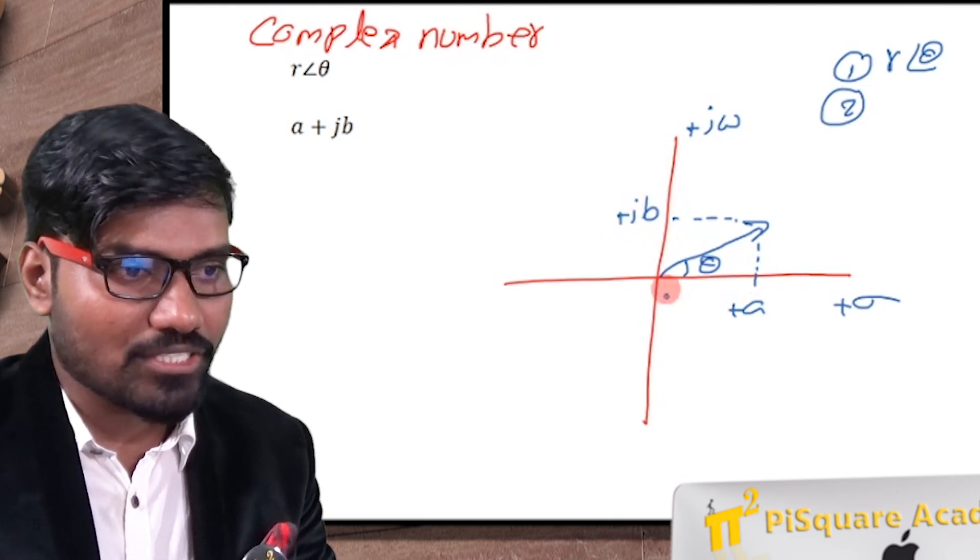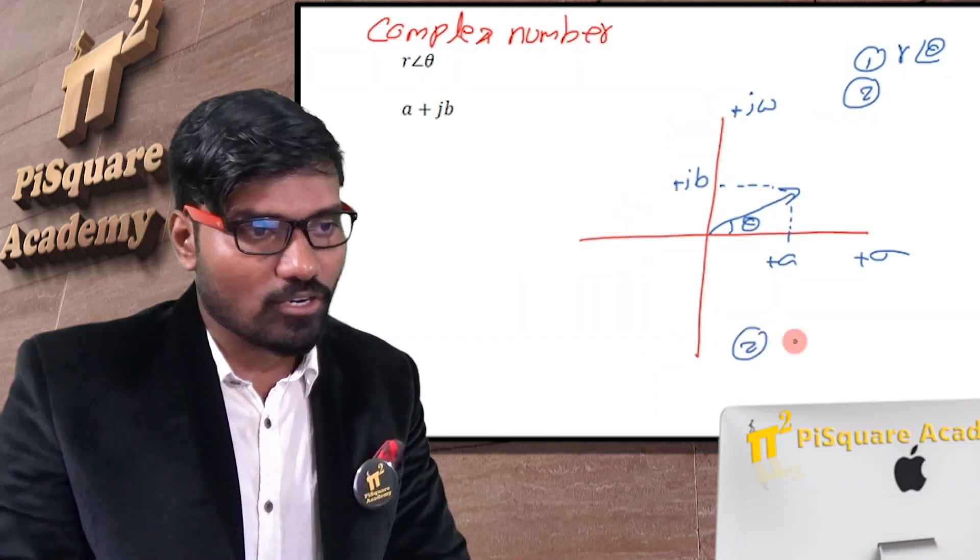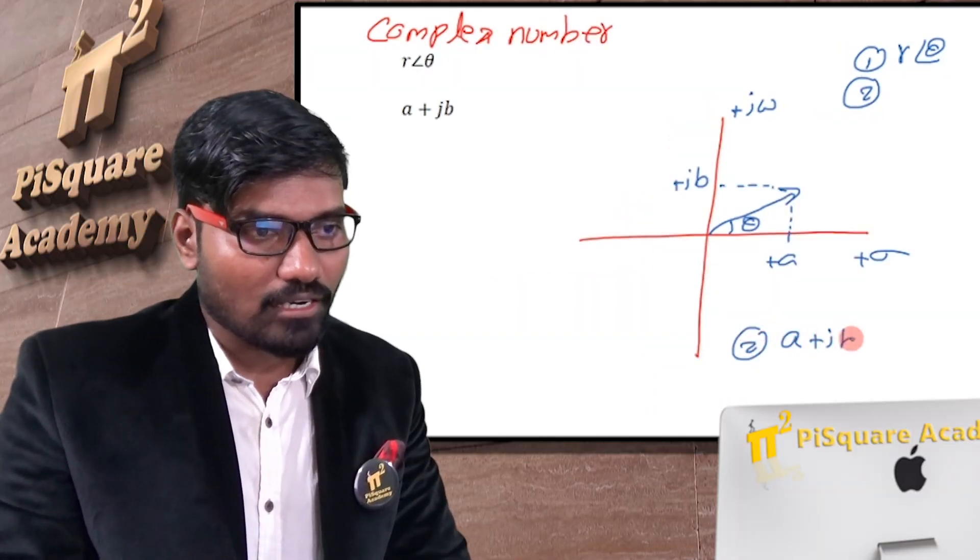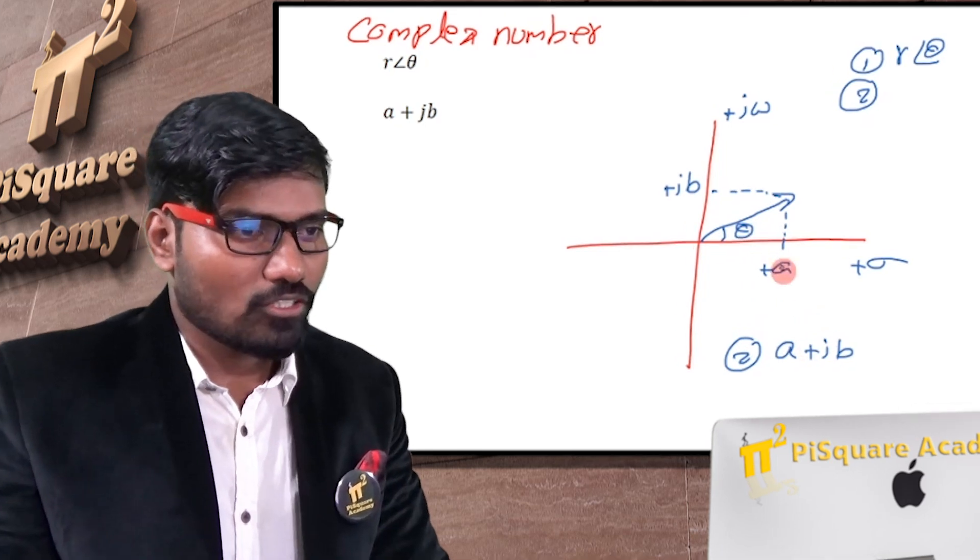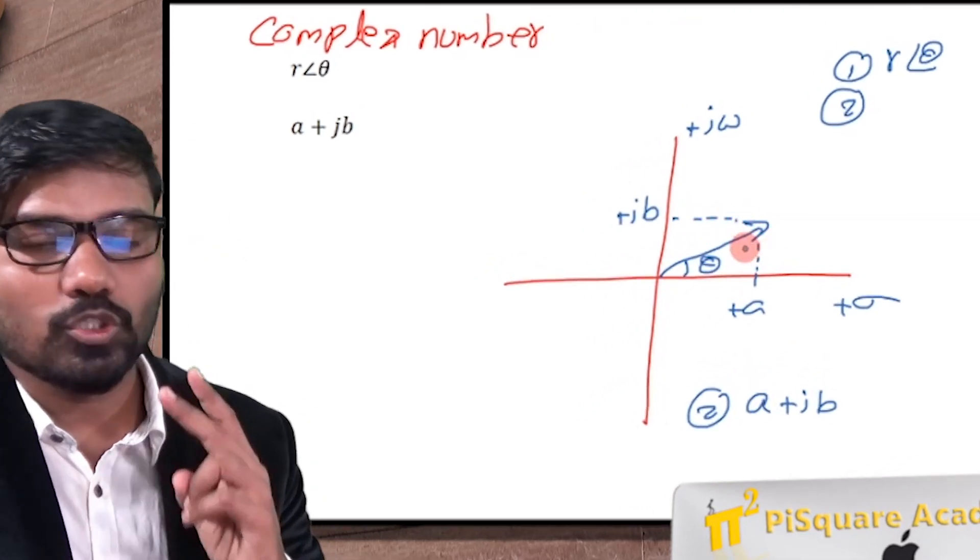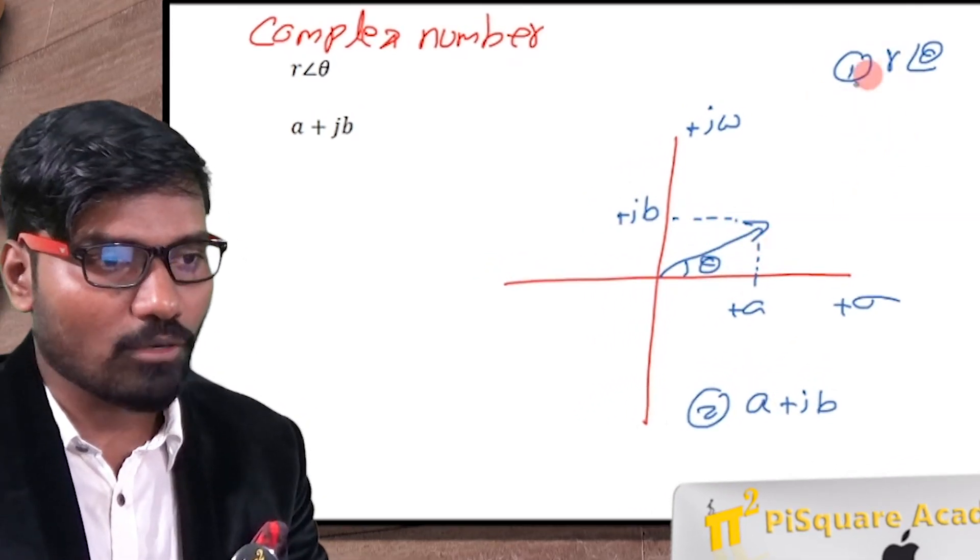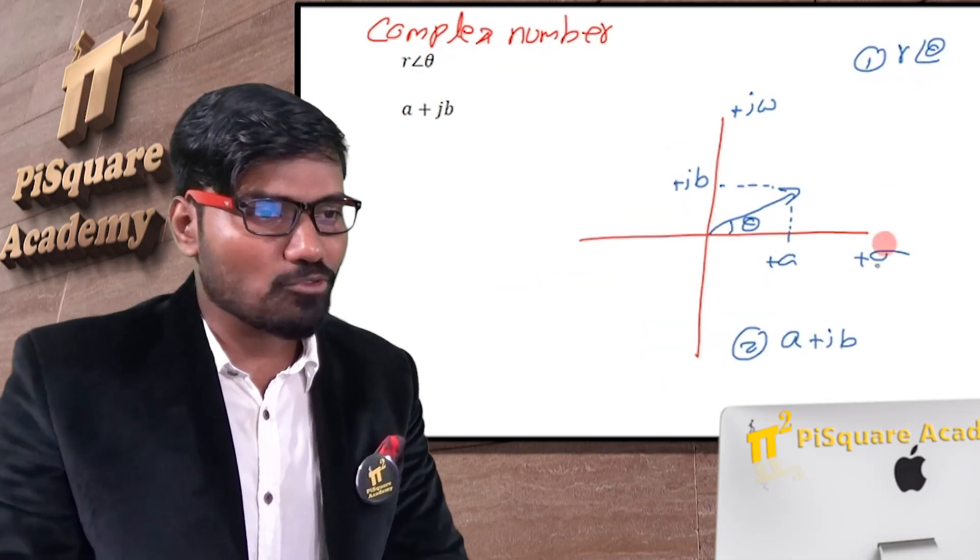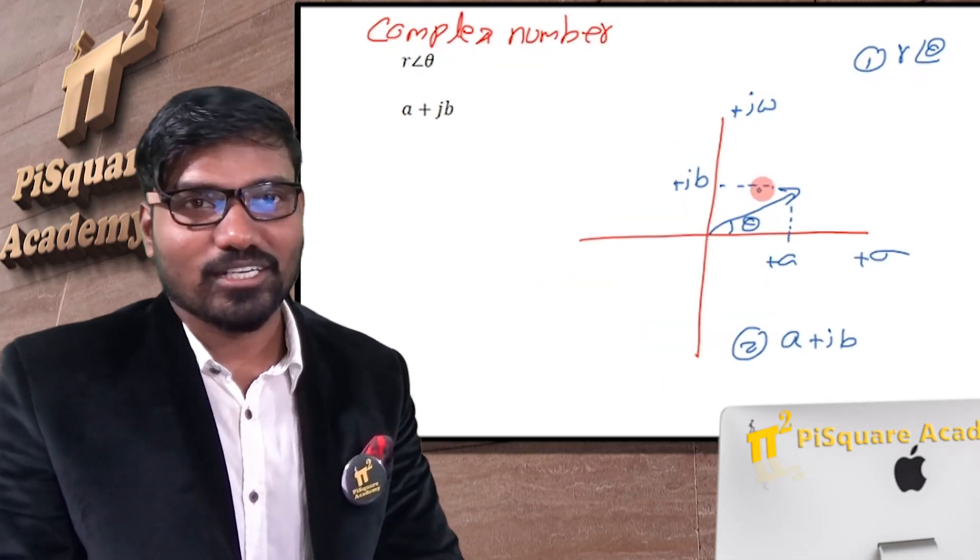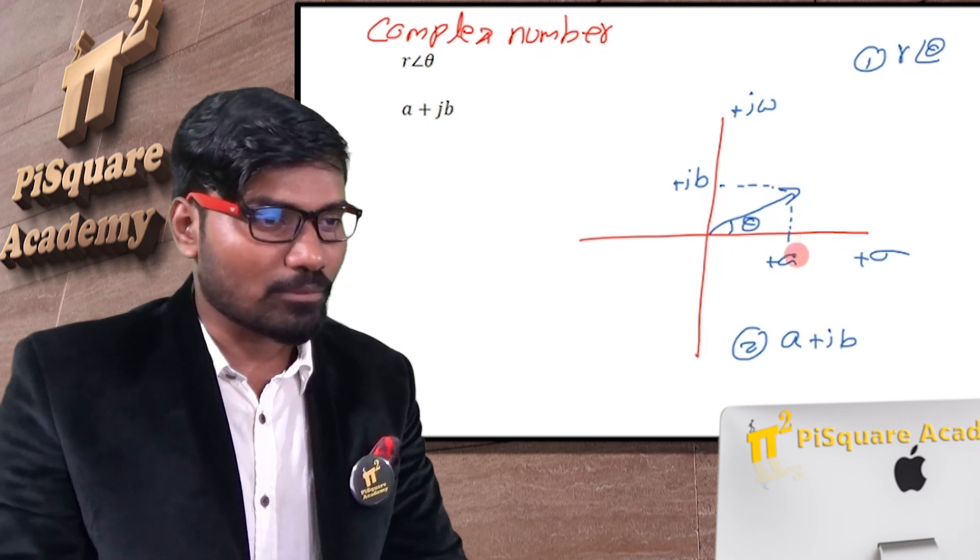So this representation, the second representation, that is called rectangular form or cartesian form. So this phasor representation can be done in two ways. One is polar form, another one is rectangular form. These two forms are actually representing this line. Same line, two ways of mathematical representation.